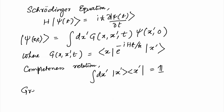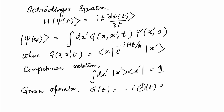We define a Green operator G(t) which is given by −i times the theta function θ(t) times e^{−iHt/ℏ}. Just to remind you, this theta function takes the value 1 when t > 0 and takes the value 0 when t < 0. So θ(t) is the usual Heaviside step function.